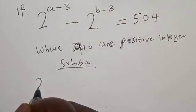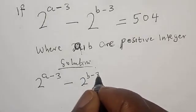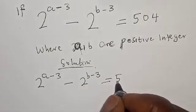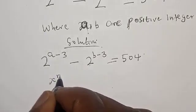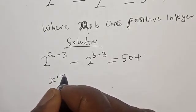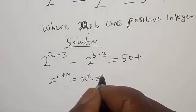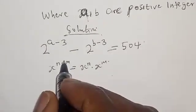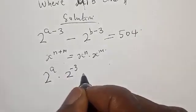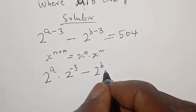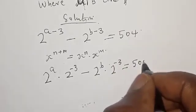We have 2 raised to power a minus 3 minus 2 raised to power b minus 3 equal to 5/4. Remember, if you have s raised to power n plus m, it is the same as s raised to power n multiplied by s raised to power m. Therefore our equation becomes 2 raised to power a multiplied by 2 raised to power minus 3 minus 2 raised to power b multiplied by 2 raised to power minus 3, equal to 5/4.